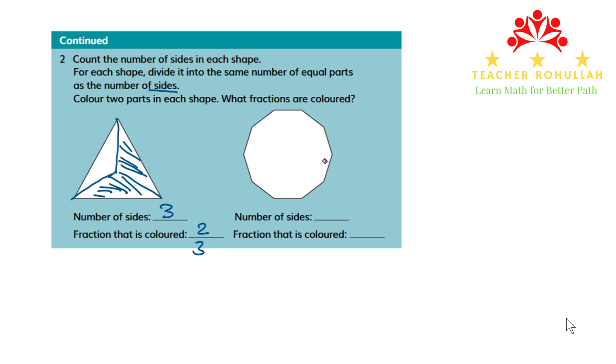Now we count the number of sides in the second shape. One, two, three, four, five, six, seven, eight, nine, ten. Ten sides are there in this shape. So we cut this shape into ten equal parts.